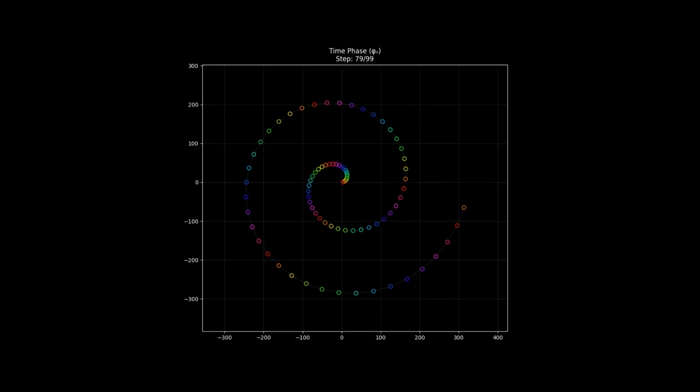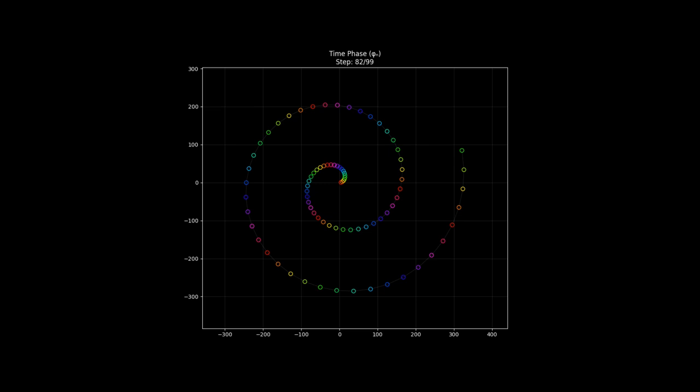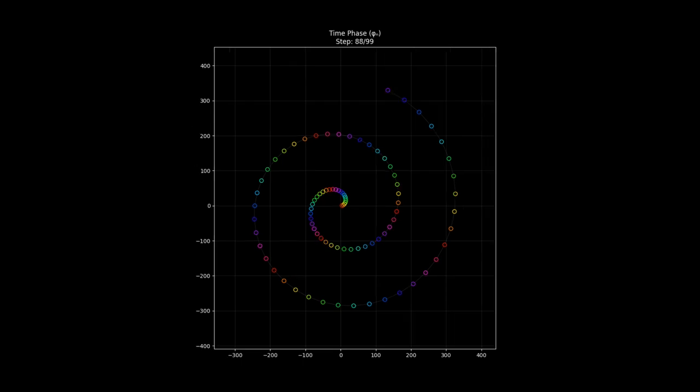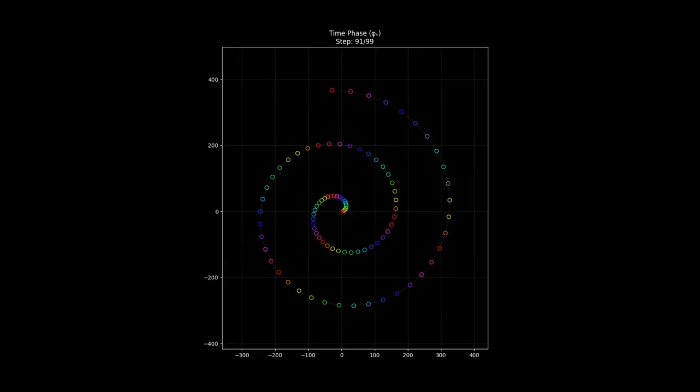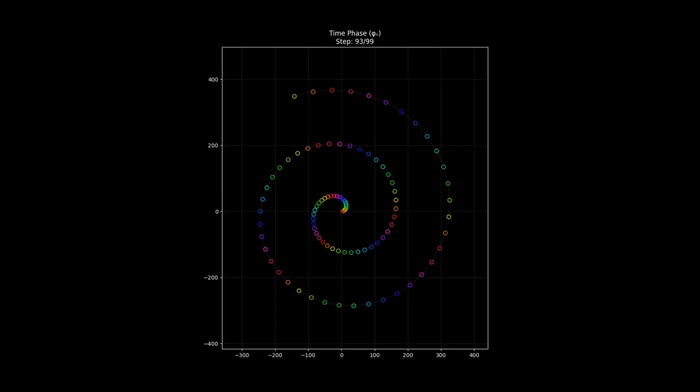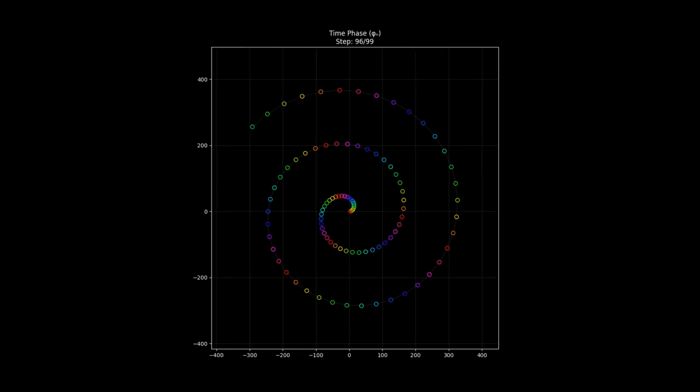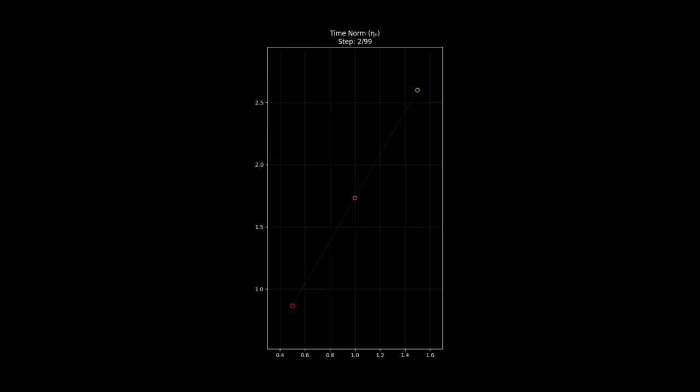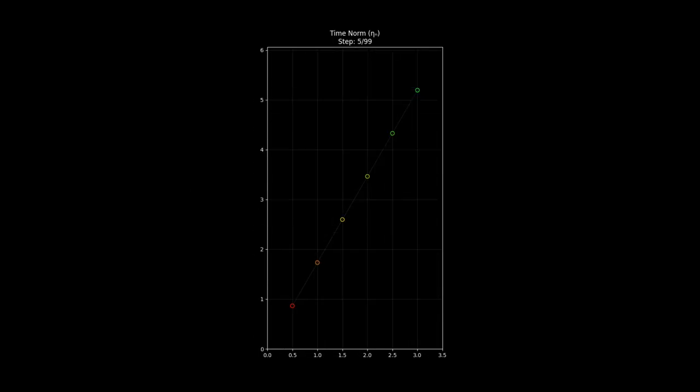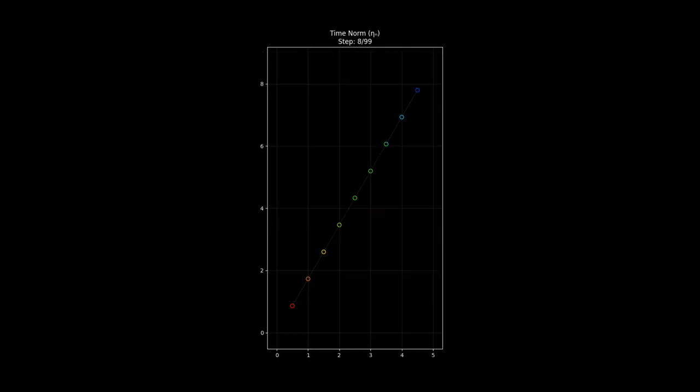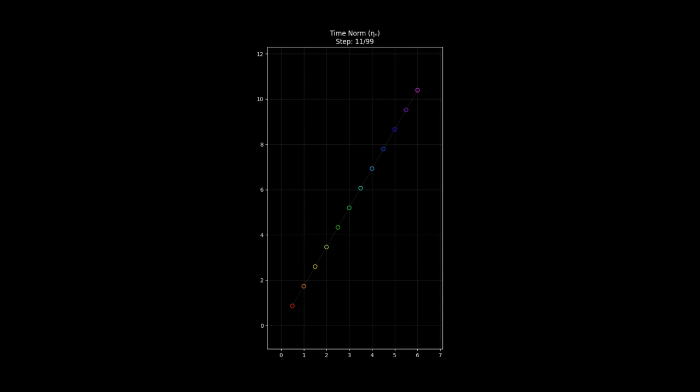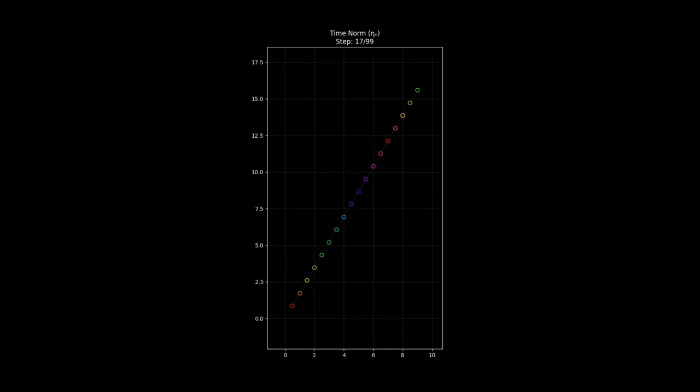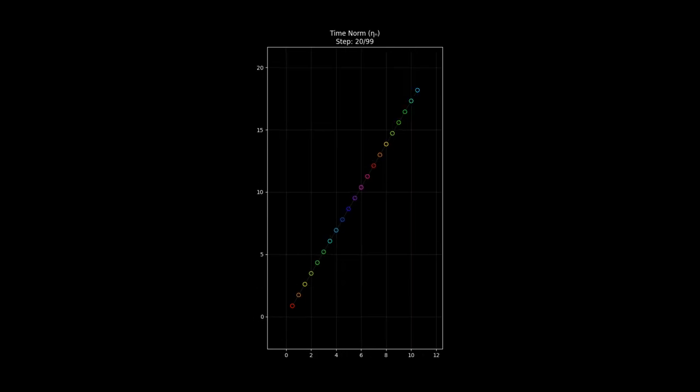But here's the catch: the real frequencies of musical notes, when you look at them mathematically, involve those same irrational numbers we've been talking about. Which means no matter how many times you go around that circle of fifths, you'll never land back on the exact starting frequency. There's always this tiny difference because of how those irrational numbers work. So even in music, which seems so harmonious and beautiful, those irrational numbers are there in the background, messing things up just a little.